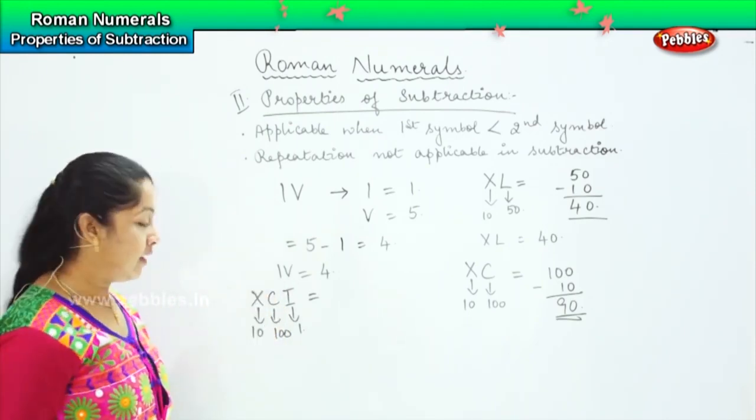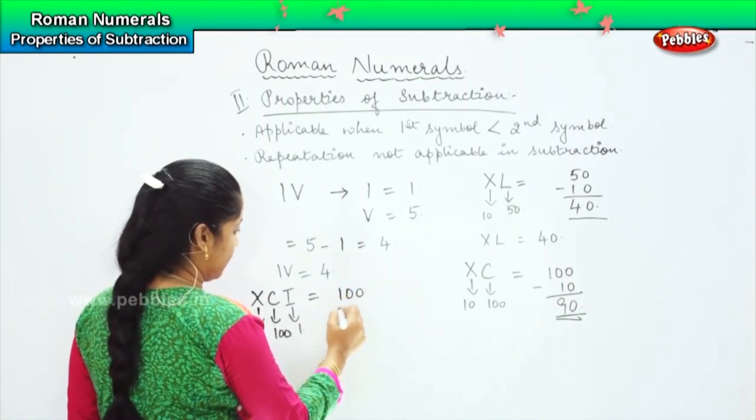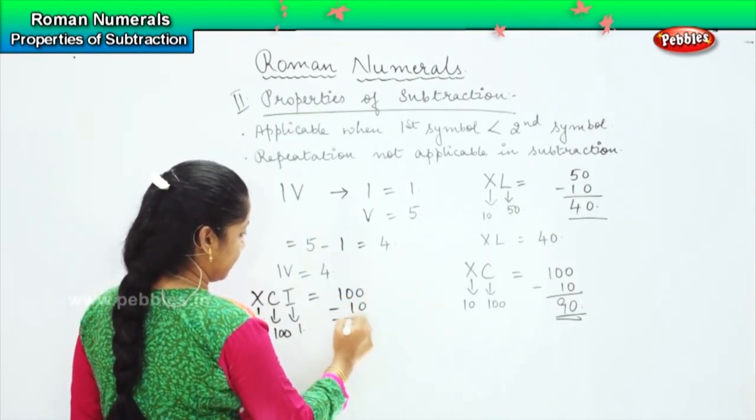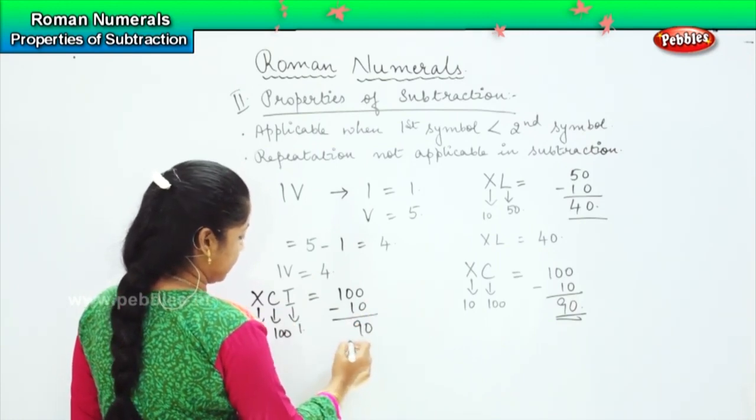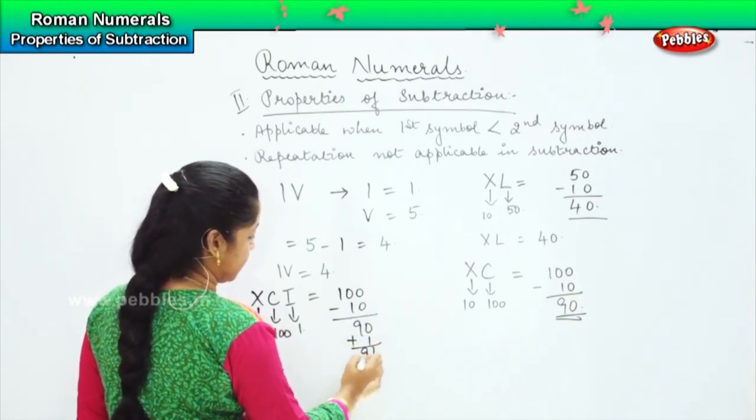So which will be 100 minus 10, that's 90, and then here it is plus 1, so it is 91. Clear?